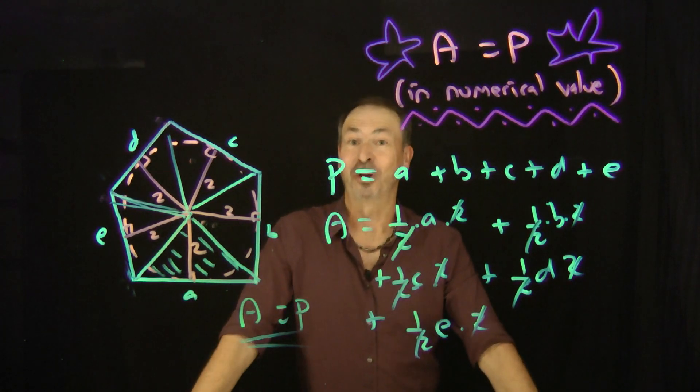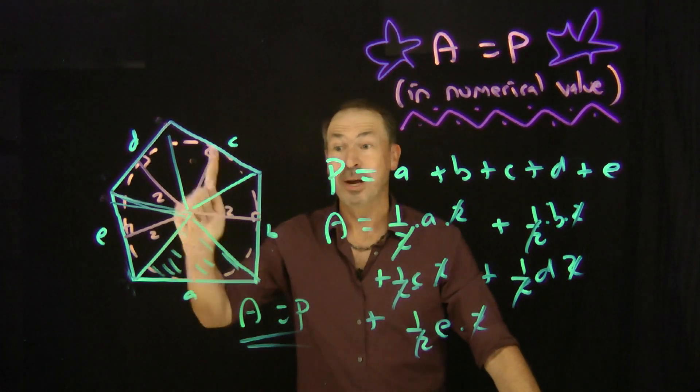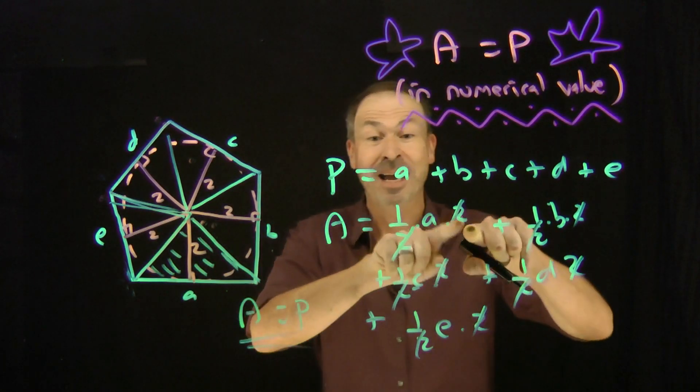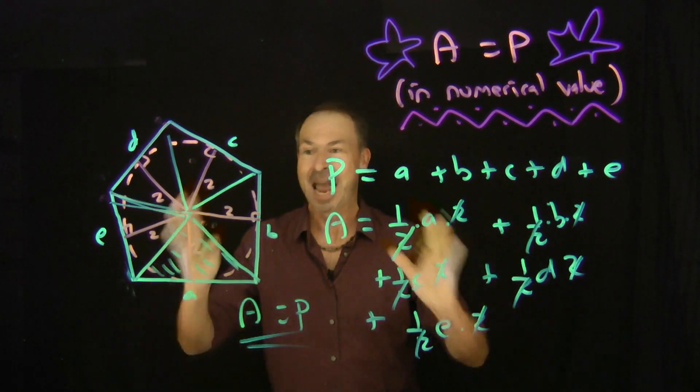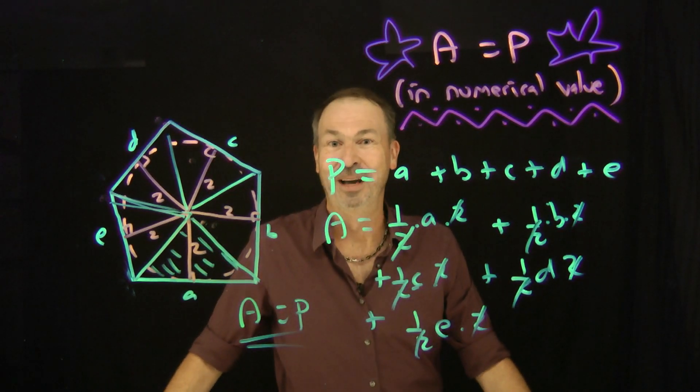In fact, only a radius of 2. If I didn't choose 2 here, I would not have an area equal perimeter. It has to be a radius of 2 for this to work. Wow!